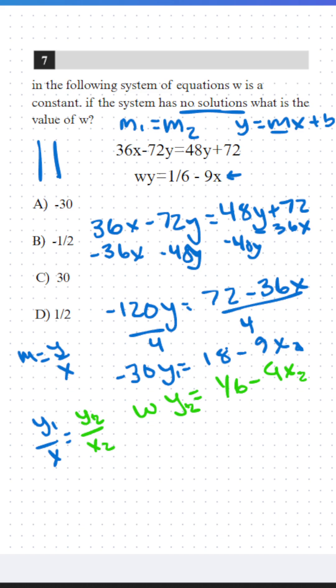So we have y1 is equal to negative 30, the coefficient in front of y1, with negative 9x1, is going to be equal to w and negative 9x2.